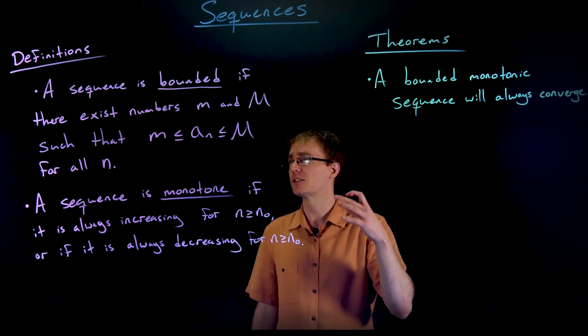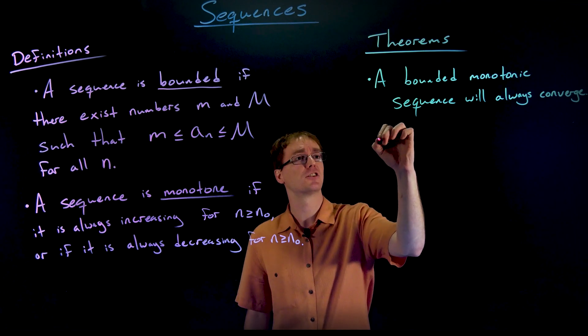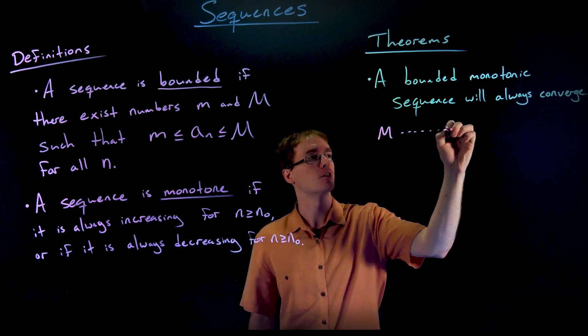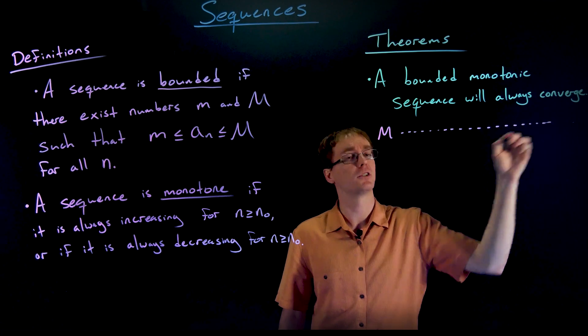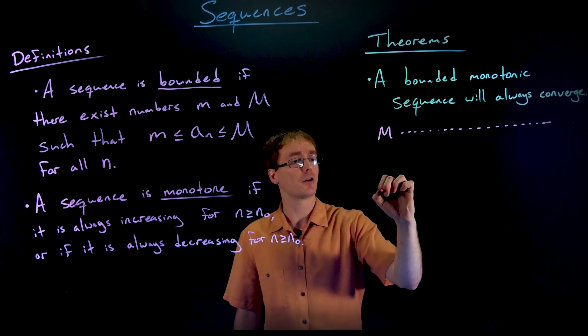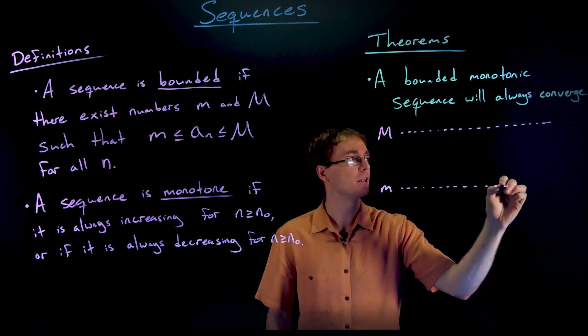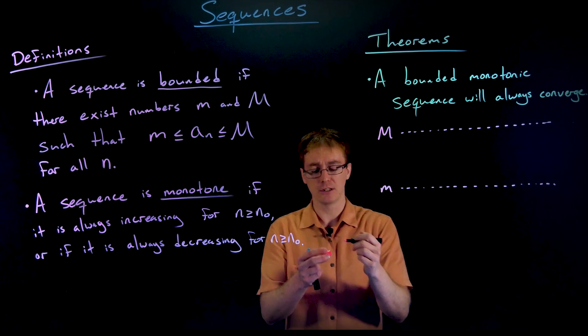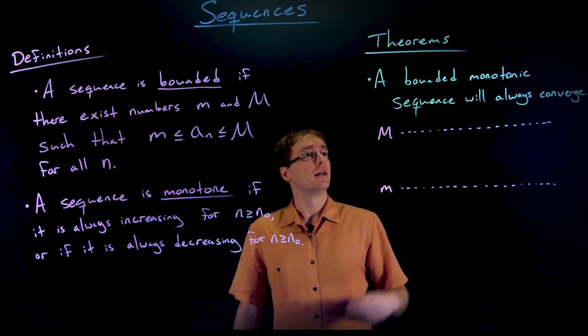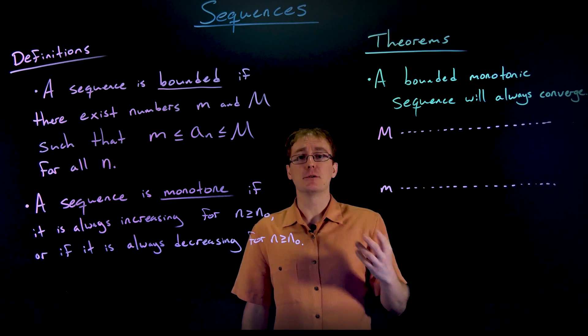If our sequence is bounded, that means there exists some number capital M or some maximum value that the terms in our sequence are always below. And there also is going to exist some lower bound or minimum value little m that the terms in our sequence are always above. That's what we get for a sequence being bounded.